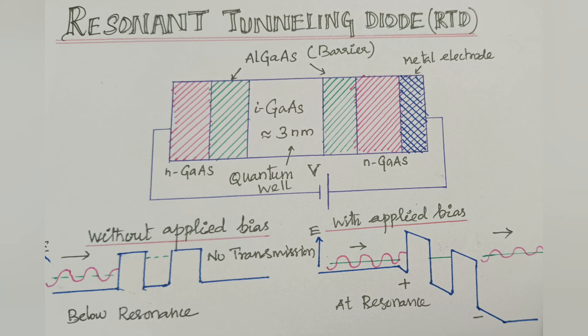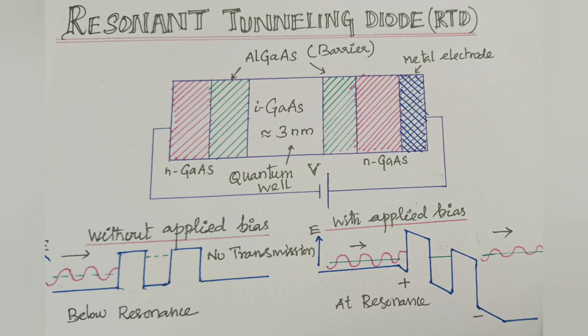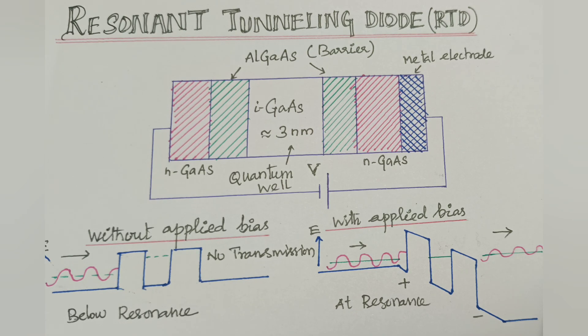Today we have discussed about Resonance Tunneling Diode. So here we are going to talk about principle, construction, working - that is working in two conditions: one is without applied field, another one is with applied field. Then, current energy characteristics, that is VI characteristics, and applications of Resonance Tunneling Diode.